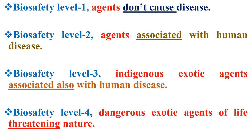In general, biosafety level 1 refers to agents that don't cause disease, and biosafety level 2 refers to agents that are associated with human disease. Meanwhile, biosafety level 3 refers to indigenous and exotic agents also associated with human disease, and finally biosafety level 4 refers to dangerous exotic agents of a life-threatening nature.